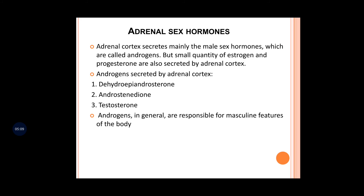The third division of the adrenal cortex — after mineralocorticoids and glucocorticoids — is the androgen sex hormones, which include dehydroepiandrosterone (DHEA), known as androgens. Some small quantities of estrogen and progesterone are also secreted by the adrenal cortex. The major hormone is testosterone, and these are all responsible for masculine features in the body.